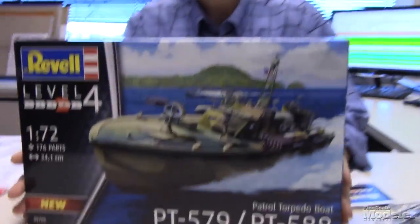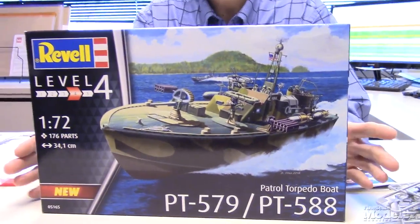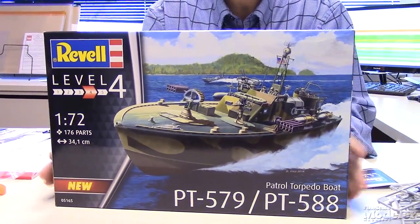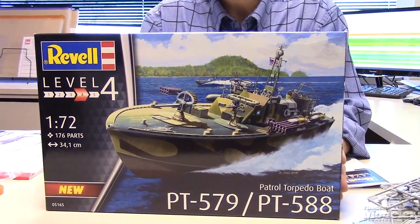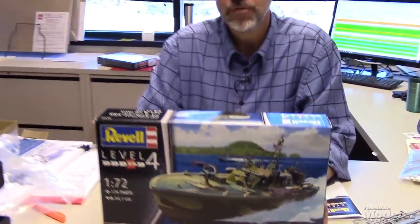So that is Revell's new version of their 72nd scale PT boat. It represents the later version. If you like your up-gunned PT boats, this is the one for you. This builds fairly easily based on Mark Karoulos' review in the magazine of the first version, the PT-109. So if you like PT boats, go ahead and pick one up. Thanks for watching. I'm Aaron Skinner, Senior Editor from Fine Scale Modeler Magazine. I'll see you next time.